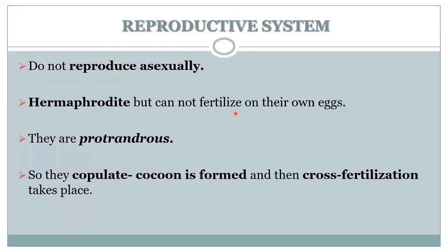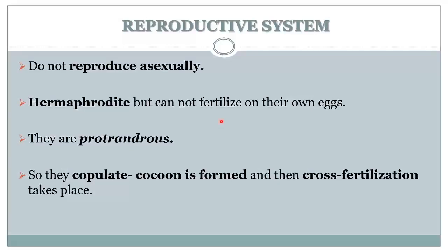But they cannot fertilize their own eggs because of the position of the genital pore in the same organism. They are protandrous, meaning the male is mature earlier than the female. In an earthworm, reproduction takes place with the help of cross-fertilization.